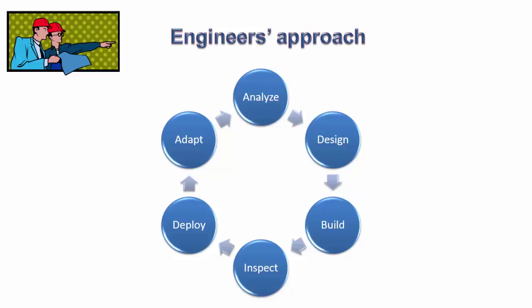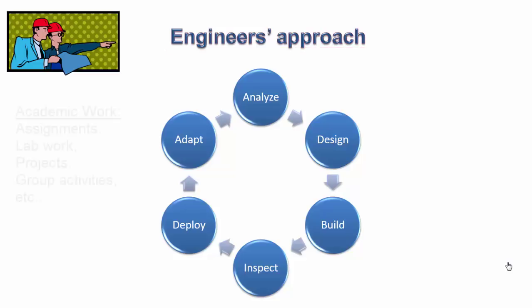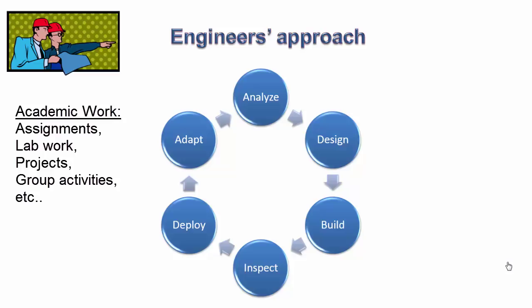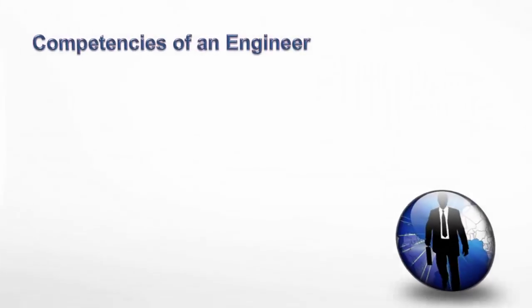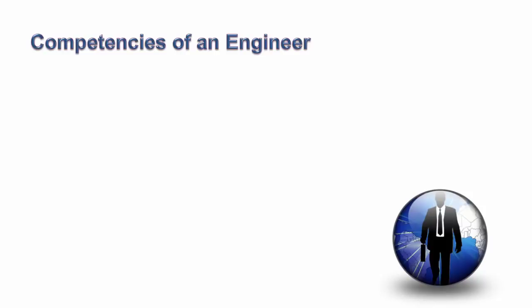This data is analyzed to understand how the overall process can be improved to reduce cost or increase efficiency and effectiveness. This approach is called the engineer's approach, and it is taught in engineering institutions through assignments, lab work, and project work. It is therefore very important that one must do this academic work honestly to learn the approach. Now let us understand what makes an engineer a competent professional — at the heart of any competency lies core knowledge and experience.